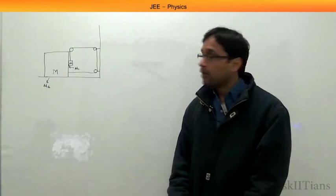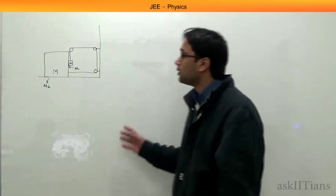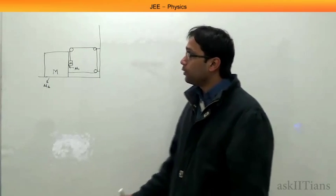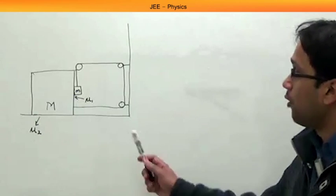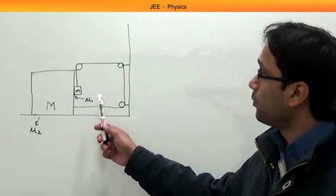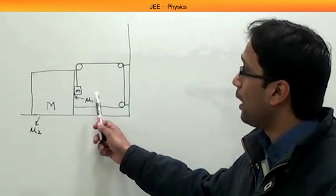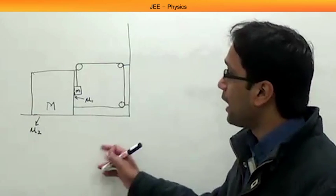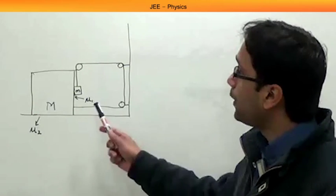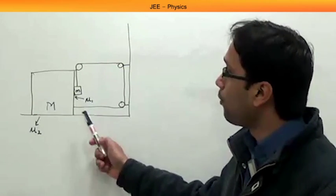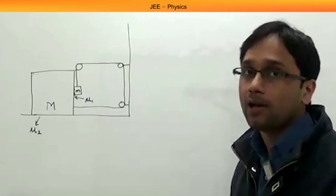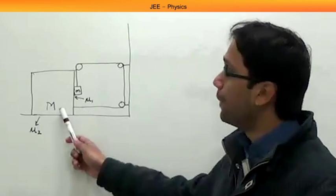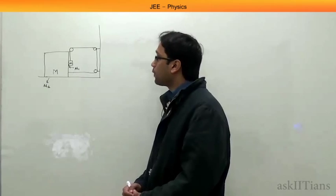So first of all, this is the problem we have. In this diagram there are two masses: one is a bigger mass of capital M and one is a smaller mass of small m. The coefficient of friction between the bigger mass and the floor is mu2, and between the small mass and the bigger mass is mu1. In this problem we have to find the acceleration of the bigger mass.